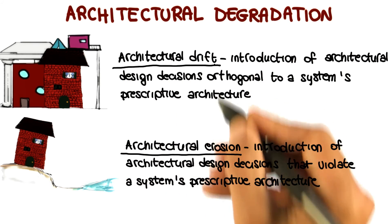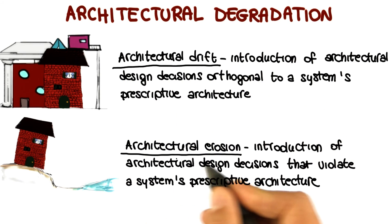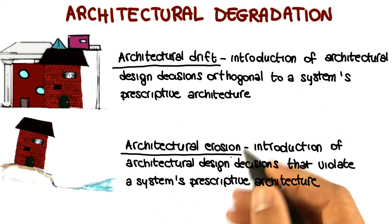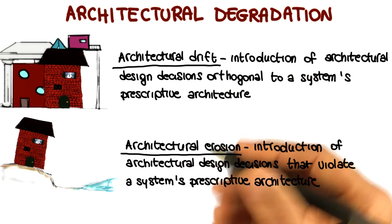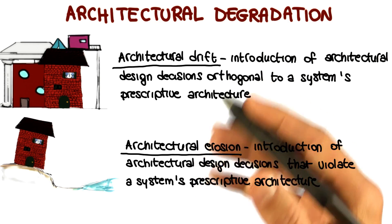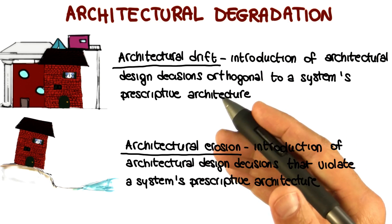So both architectural drift and architectural erosion take you away, in different ways, from what you think your software architecture is or should be.